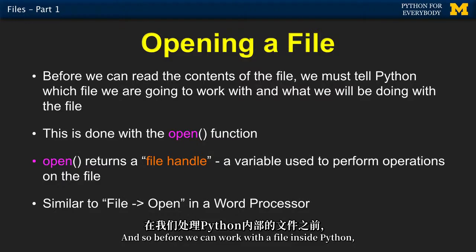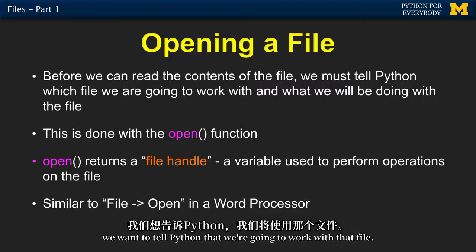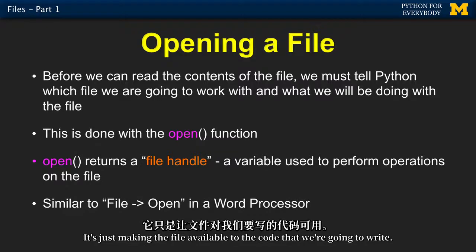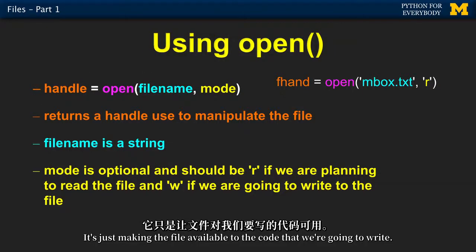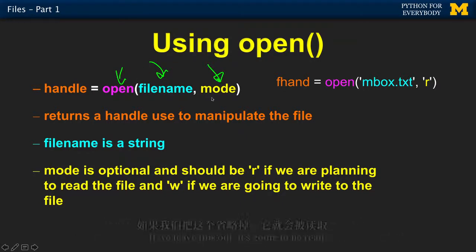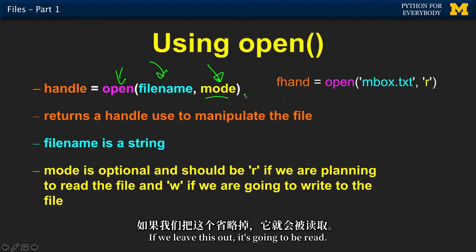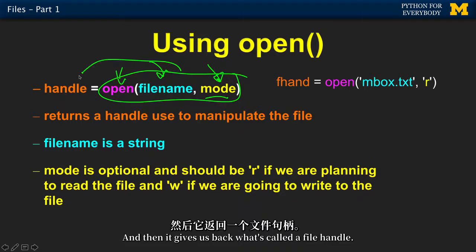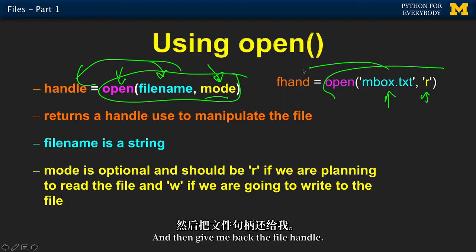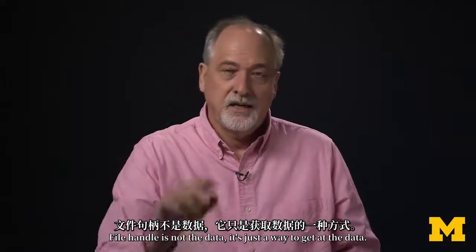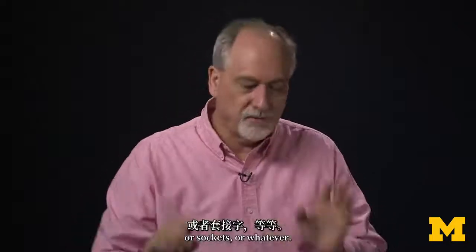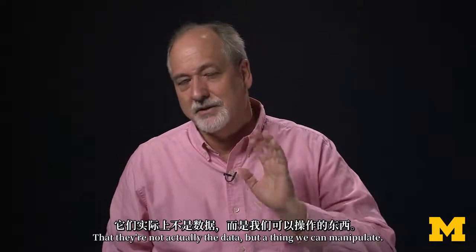Before we can work with a file inside Python, we tell Python we're going to work with it — this is called opening. It's not actually reading the file; it's just making the file available to the code. The built-in function we use is open(). We pass in the name of the file and whether we're going to read or write it. If we leave the second parameter out, it defaults to read. It gives us back what's called a file handle — not the data itself, but a way to get at the data.